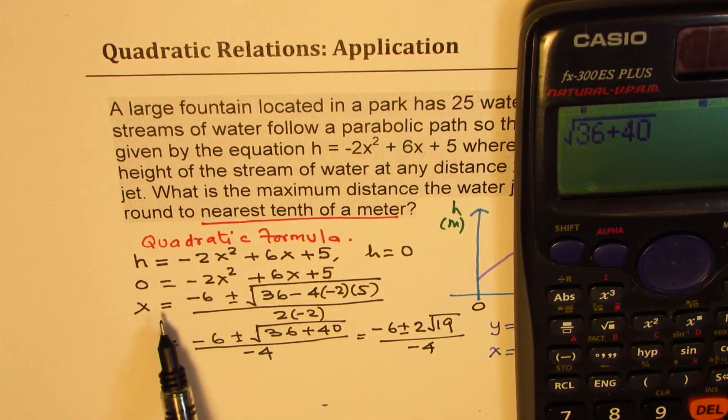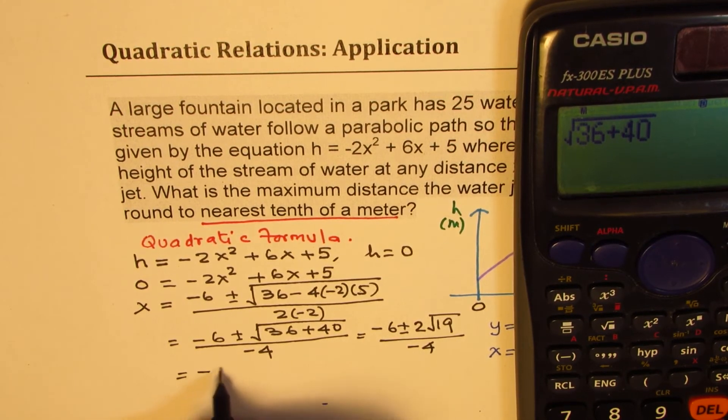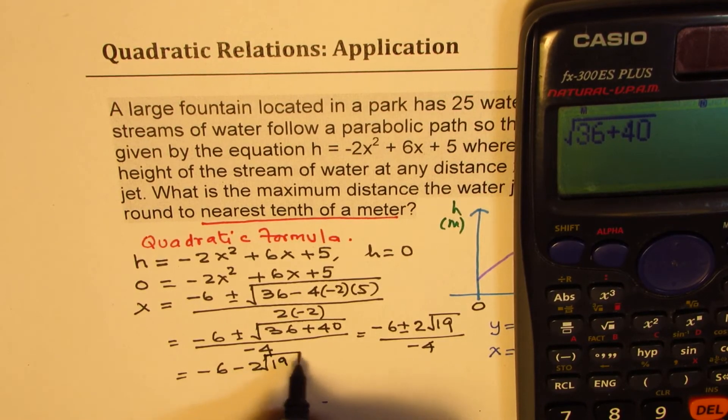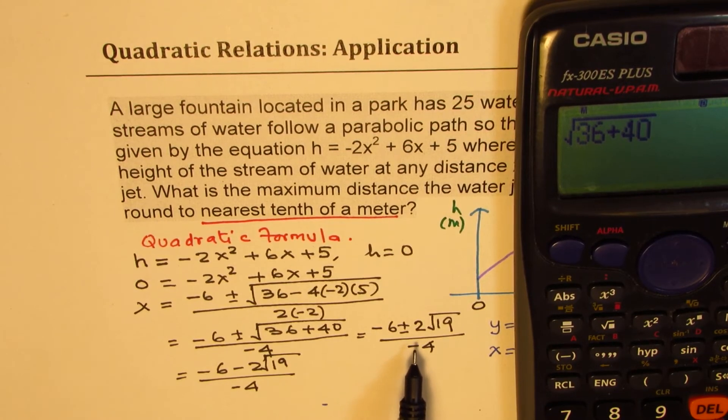Now, distance has to be positive. So we'll take the negative value. So we'll take minus 6 minus 2 square root of 19 divided by minus 4 as our answer, since that is going to give us the maximum distance.